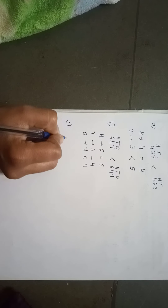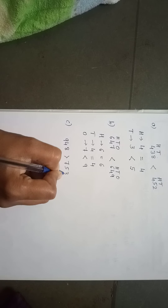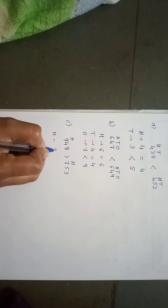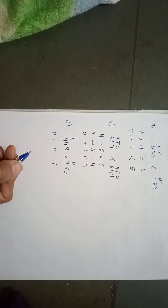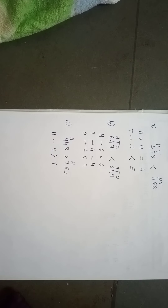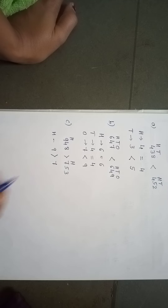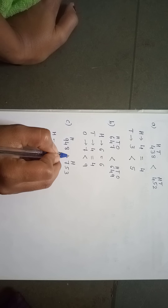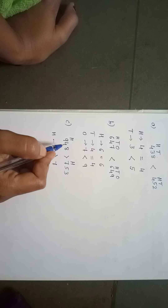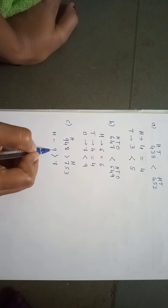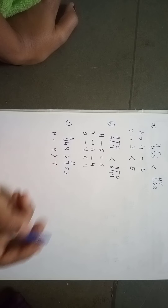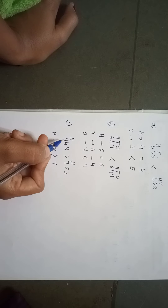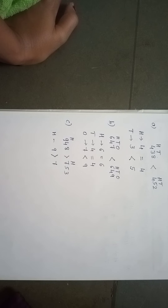We will take another example: 948 and 753. Compare the 100th place number — here it is 9 and here it is 7. In 9 and 7, which is the bigger one? 9 is the bigger one, so open the crocodile mouth to 9. When the 100th place number is bigger, there is no need to compare the 10th place and ones place. Here only we can understand that 948 is the bigger number and 753 is the smaller one.